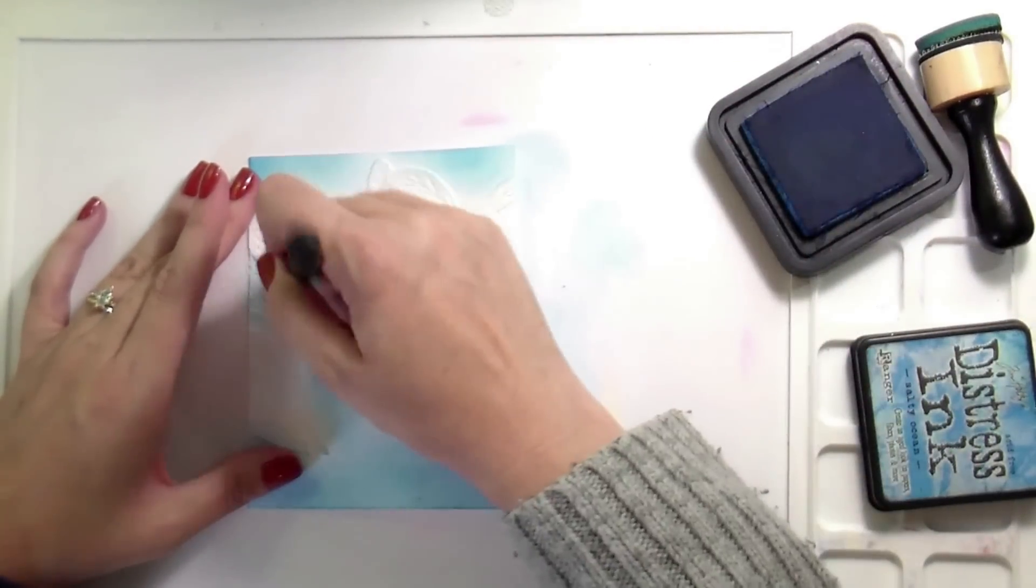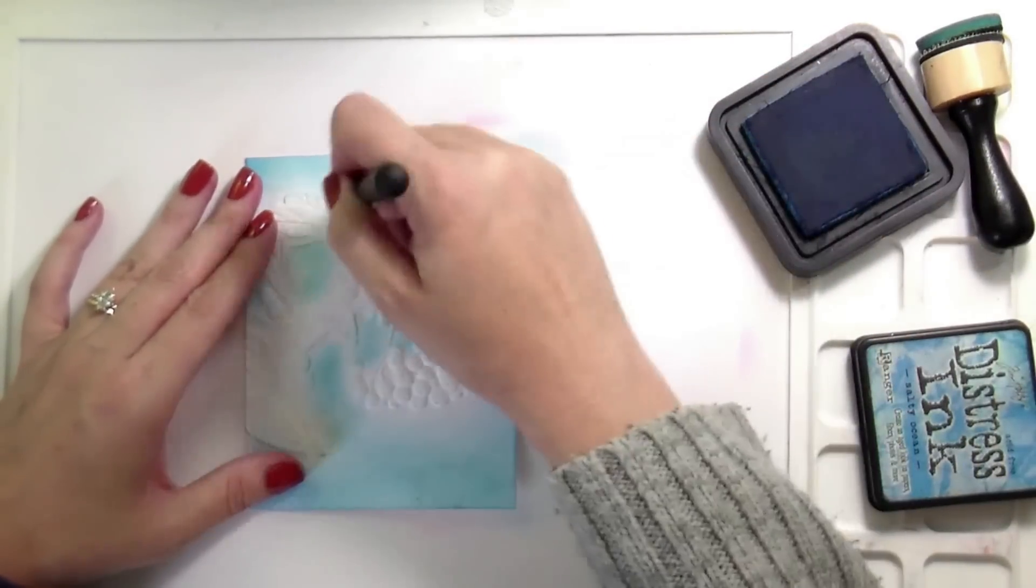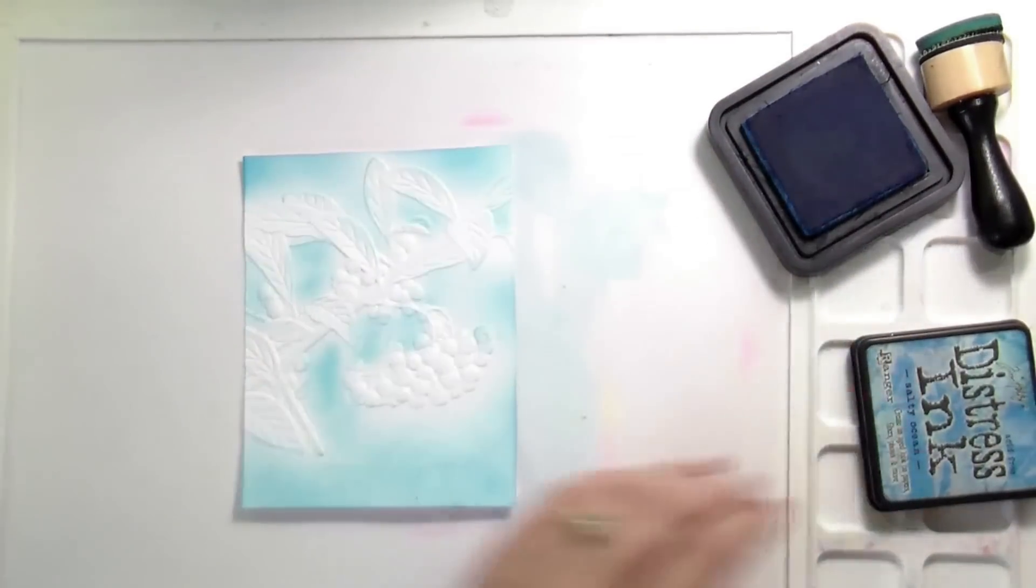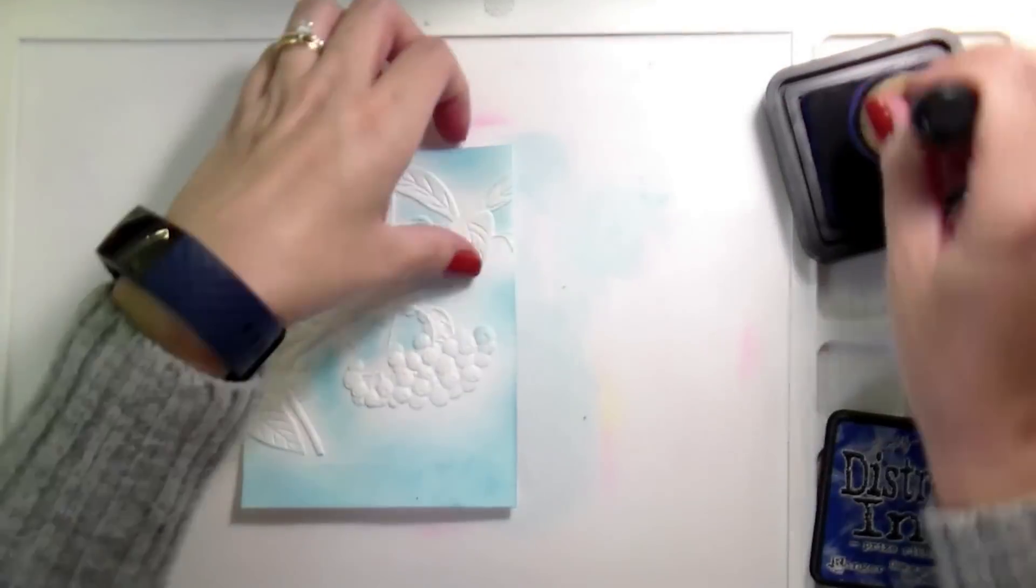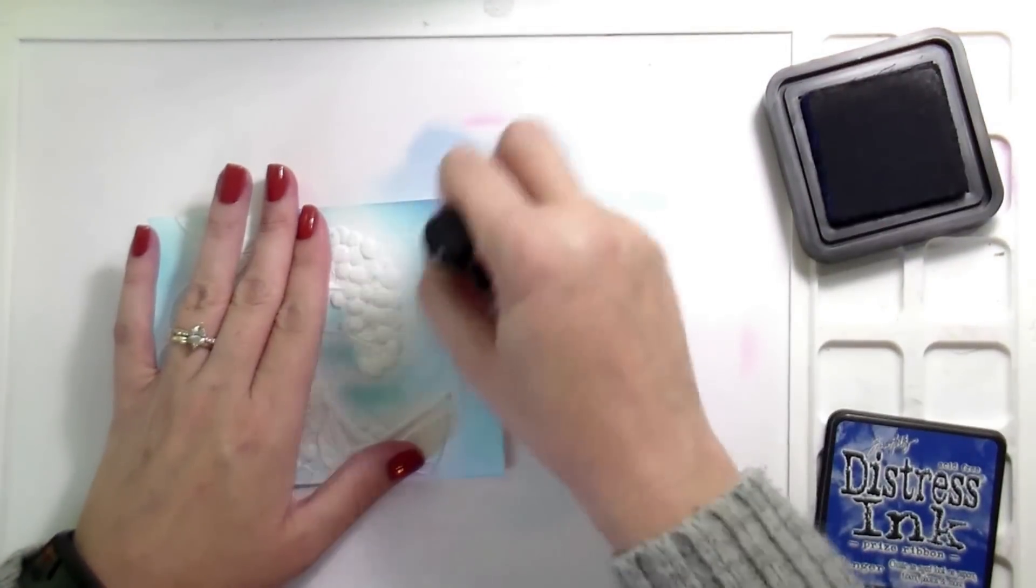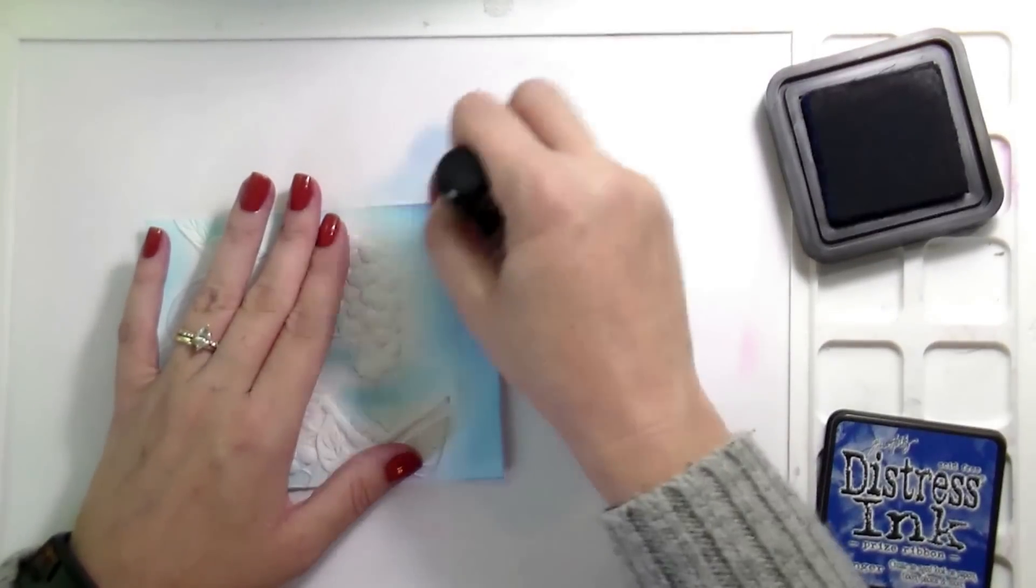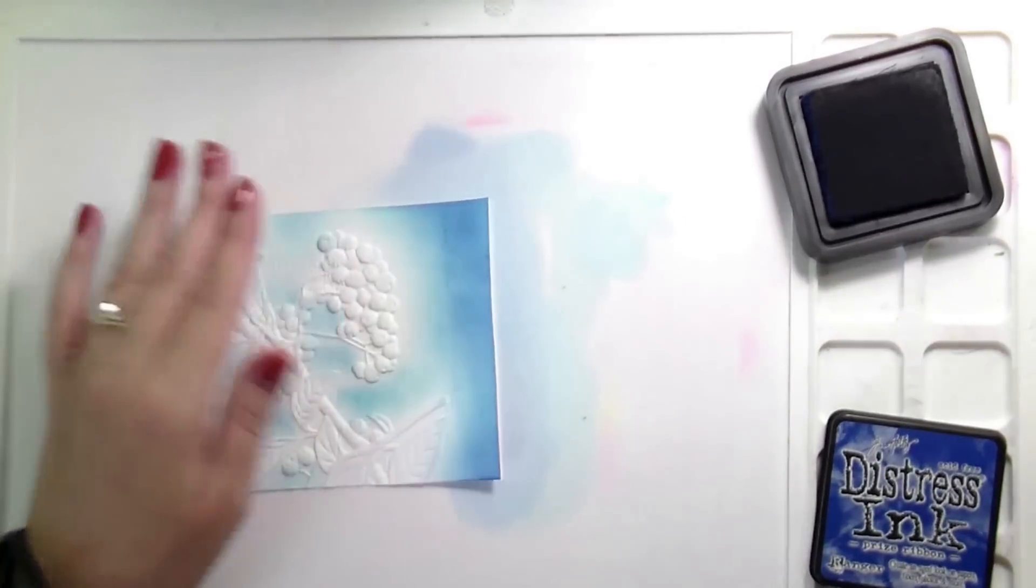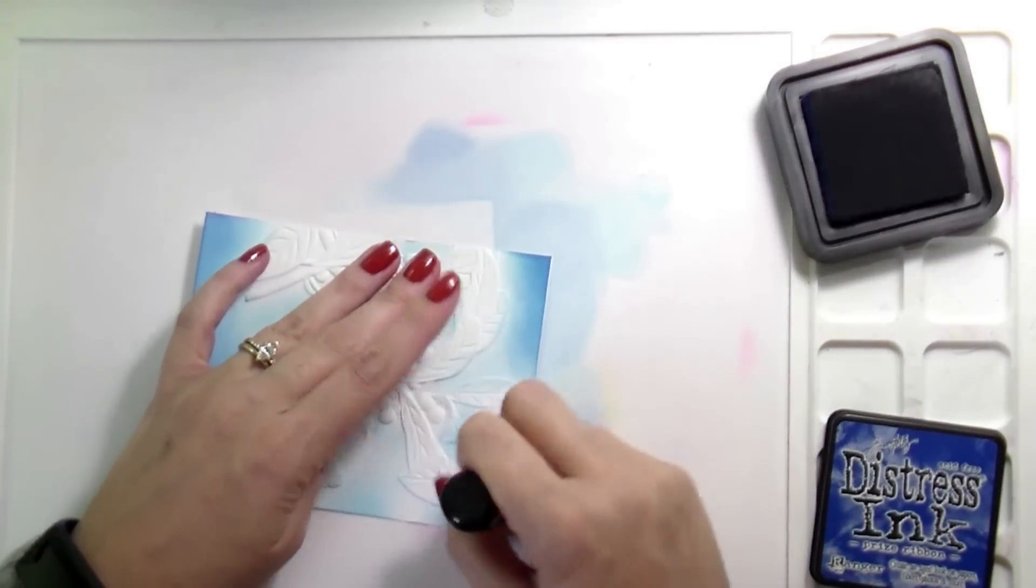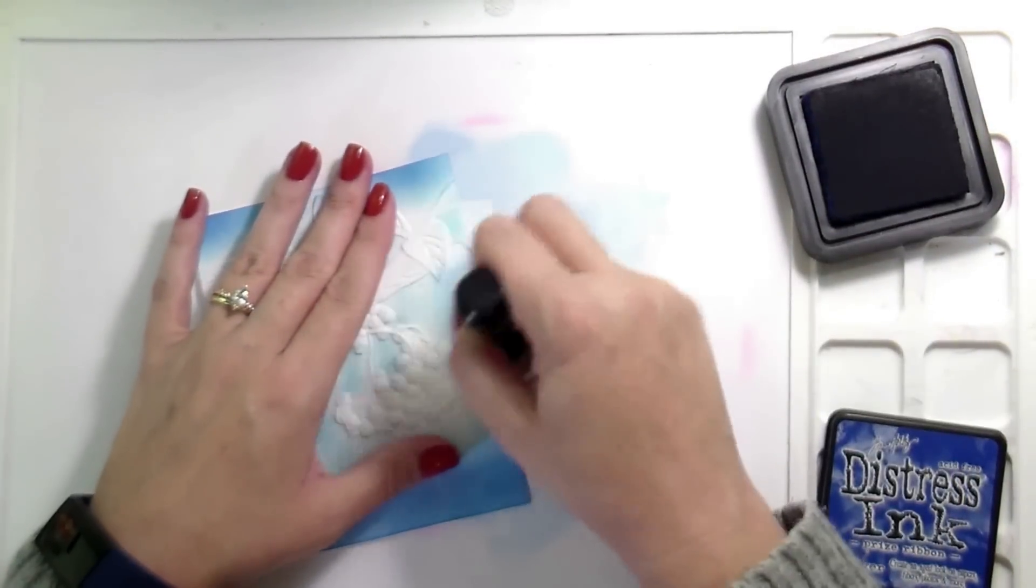And I just went in and kind of got into those smaller areas. Again, worked really well. I did kind of tap it off on my work surface first before I went in, but didn't really have any issues blending. And then I'm going to move out to make this a little bit darker. Ultimately I used Salty Ocean, Prize Riven, and Uncharted Mariner. I wanted to call it nautical something, but I guess that makes sense because it's Uncharted Mariner, but it's not nautical anything. It's Uncharted Mariner. Anywho, those are the ones I use. Those are the ones I used.